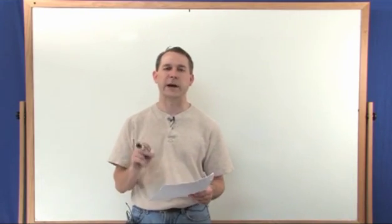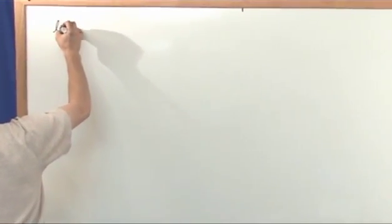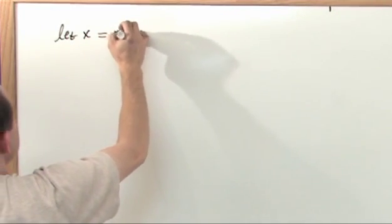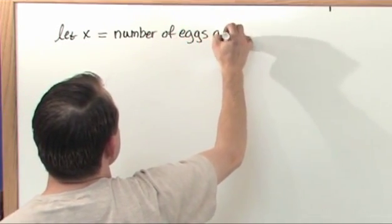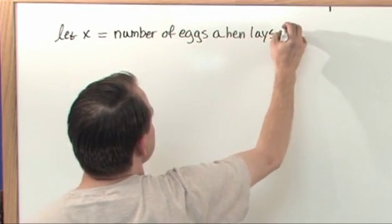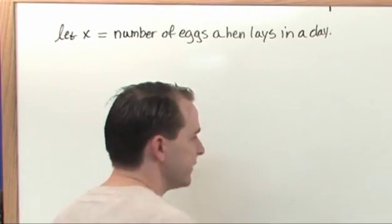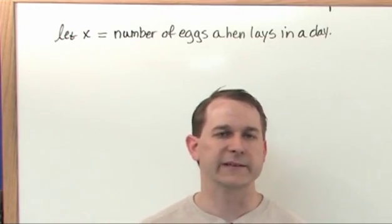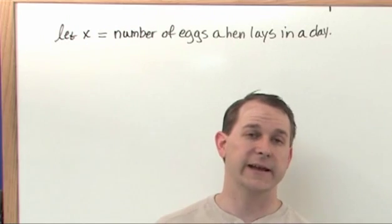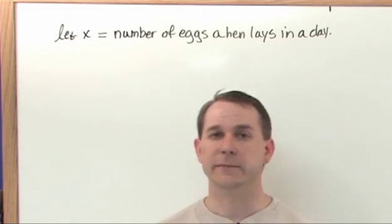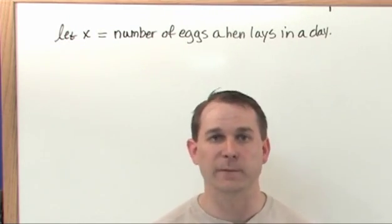So what we're going to do is we're going to define a random variable x, and we're going to say we're going to let the random variable x equal to the number of eggs a hen lays in a day. So x is going to be the number of eggs a hen lays in the day. Now think about this for a second. Chickens can lay any number of eggs in a day. On Saturday they may lay no eggs at all. Some days they might lay one. Some days they may lay two. Some days they may lay four. And again, they can vary depending on what's going on. They may or may not lay an egg at all.